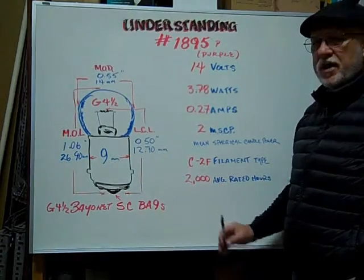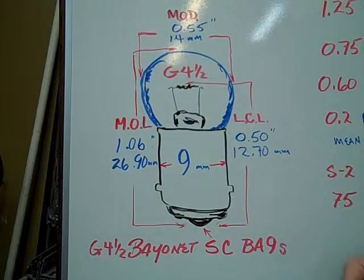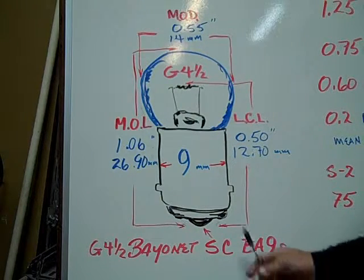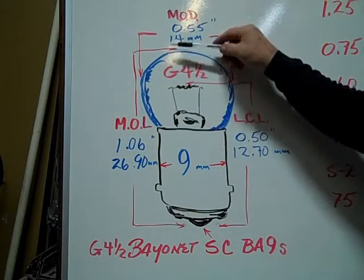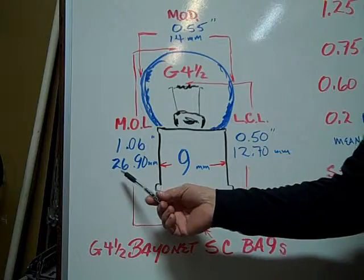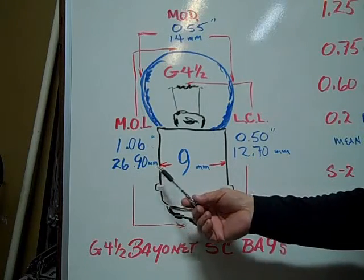The average rated hours are 2,000 hours. The G4.5 bayonet single contact BA9S based bulb has a maximum overall length of 1.06 inches, 26.90 millimeters.